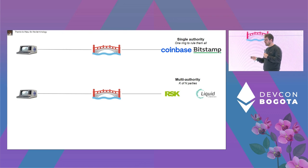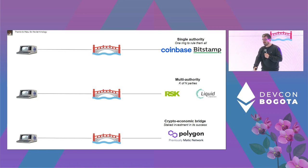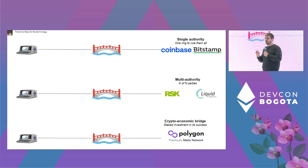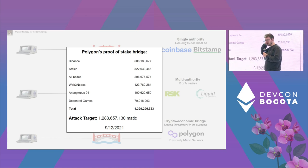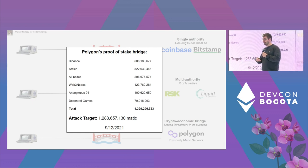Then came crypto-economic bridges: stake assets, become a validator, and appoint yourself to protect the funds. But in all three cases, including crypto-economic bridges, they're still just multi-authority. In late 2021, around six entities represented about 85% of the stake on Polygon — those six entities are who you're trusting to protect assets in Polygon's proof-of-stake bridge. If they collude, they can steal your funds, though so far they've done a pretty good job.